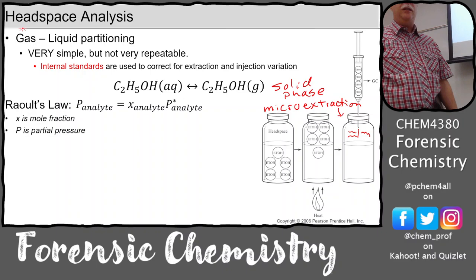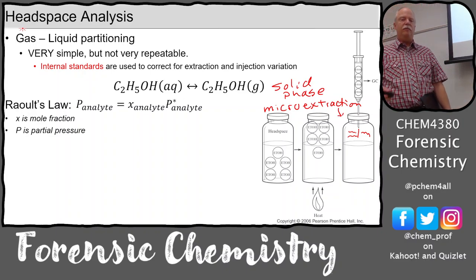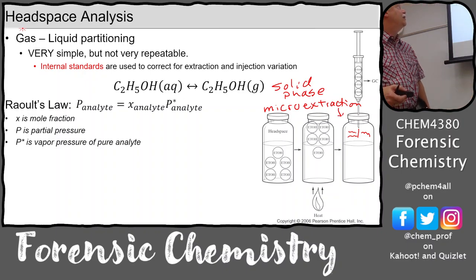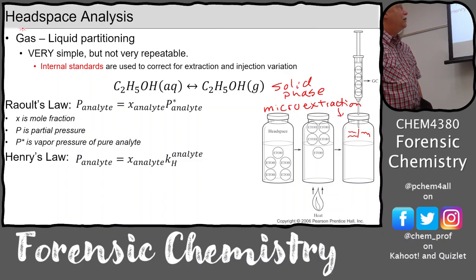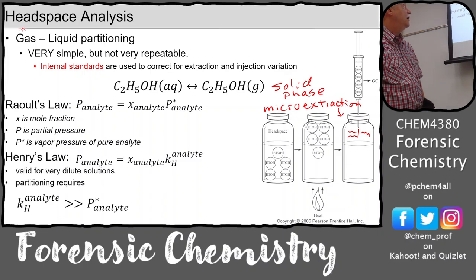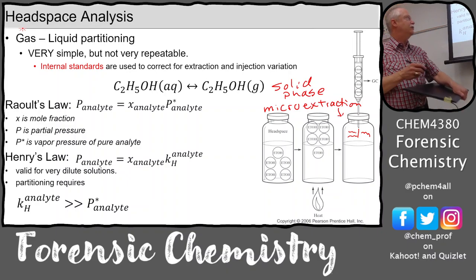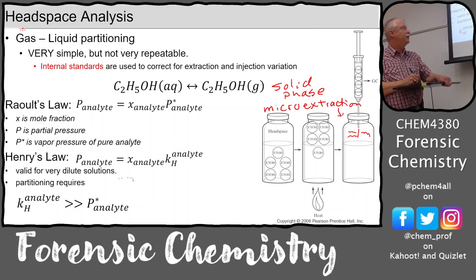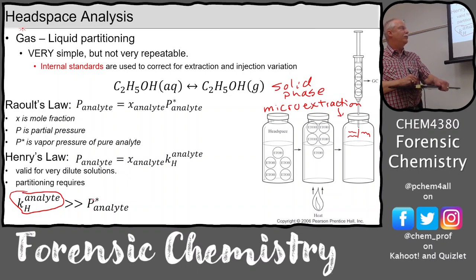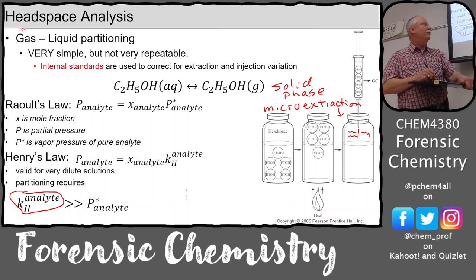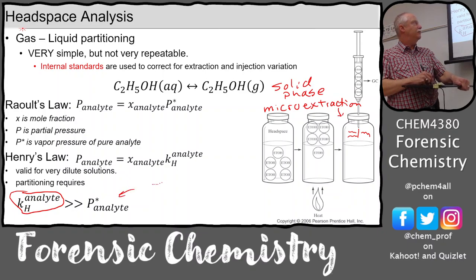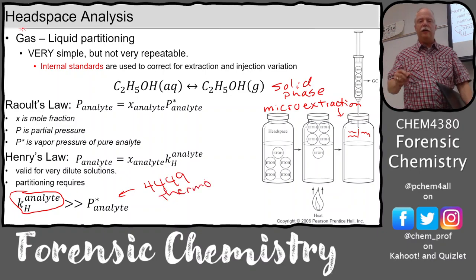Gas partitioning can use Raoult's law to study the main component like the solvent. It can also use Henry's law using the Henry's law constant, which is valid for very dilute solutions — a dilute analyte in a large matrix. The Henry's law constant for the analyte is much greater than the vapor pressure of that analyte.